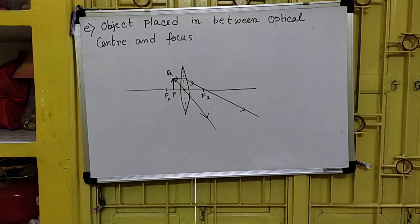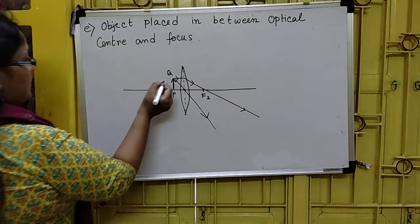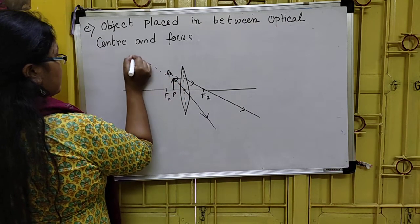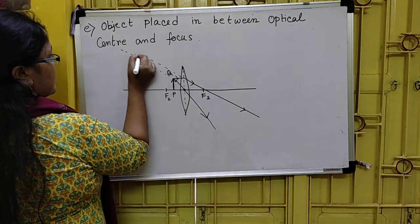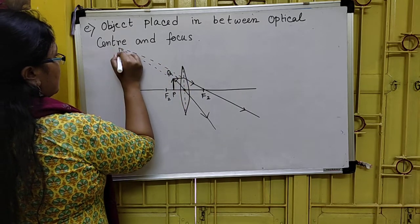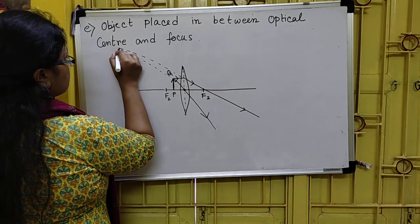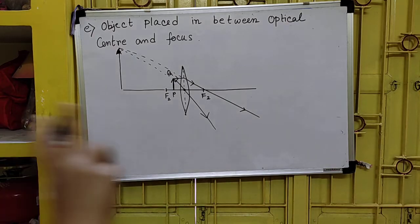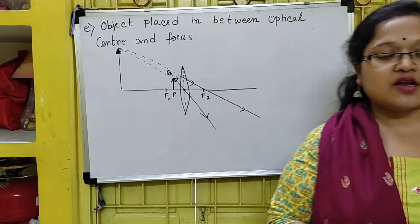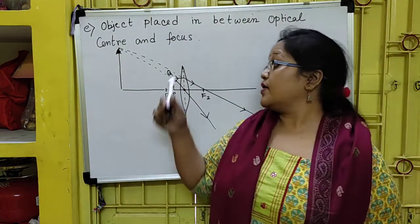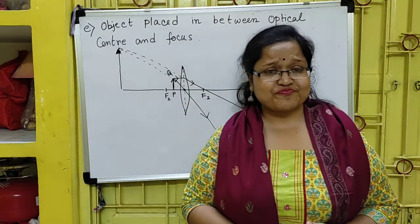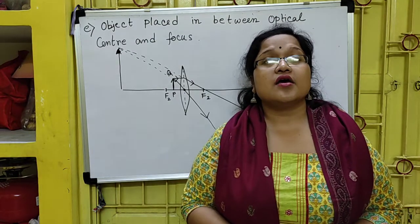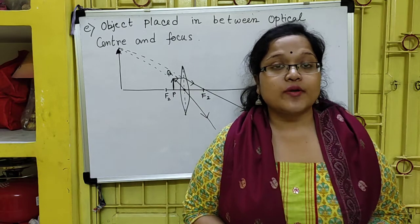So where do they meet? They will meet on this side, meaning here on the same side. So we are getting a highly magnified, enlarged image, and it is a virtual image. Remember that two conditions for a magnifying glass are possible: either you are keeping the object directly at the focus, or you are keeping your object in between the optical center and focus.